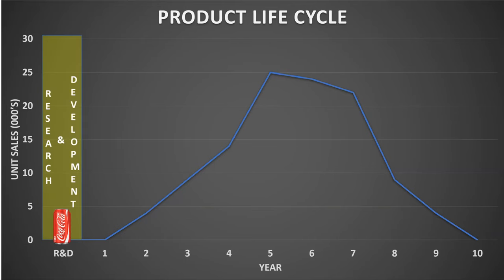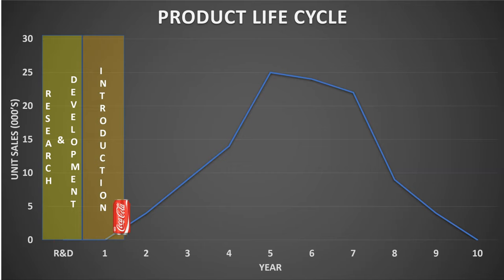The product life cycle starts at the research and development stage. This tends to be very time consuming and costly as the product is being designed and isn't yet produced. Therefore there are no sales, so cash flow is negative at this stage.